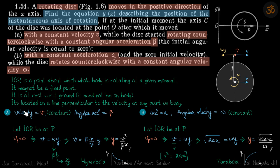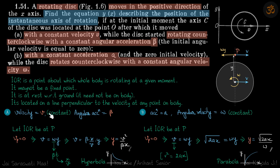Using these four points, let's find the instantaneous axis of rotation of this disc. There are two parts: in the first part the disc is going forward with a constant velocity but has an angular acceleration beta. In the second part it's rotating with constant angular velocity omega but has a linear acceleration a. We need to find the coordinates of the IOR in each case.